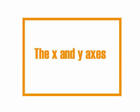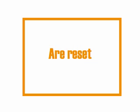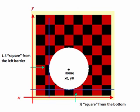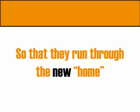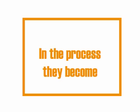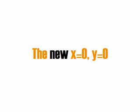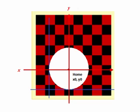When we reset home, the X and Y axes are reset along with it. Where we had perhaps arbitrarily had X and Y axes running along the edge of the material, they are now reset so that they converge at point zero-zero — which is of course also the center point of our circle. They now run through the circle, through the new home, and in the process become the new X equals zero, Y equals zero, reestablishing the X and Y axes on our diagram.